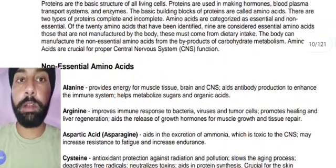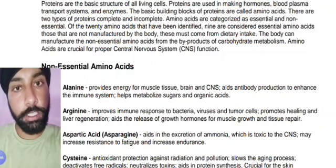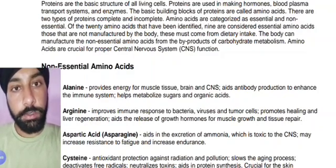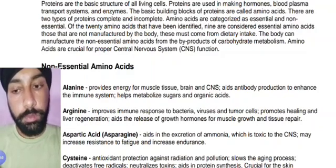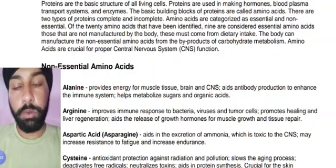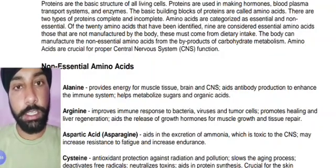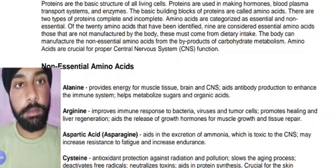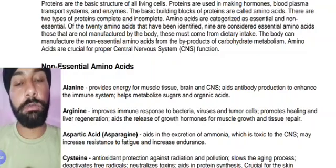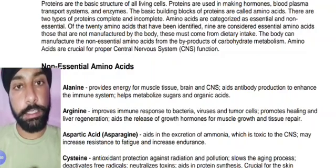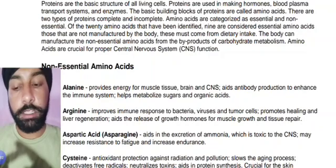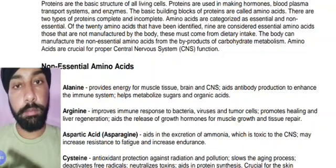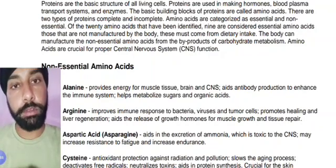Amino acids are crucial for proper central nervous system function. For muscle building, protein is very important. They are the basic structure of all living cells. There are two types of protein sources: complete and incomplete.